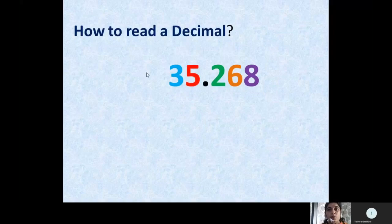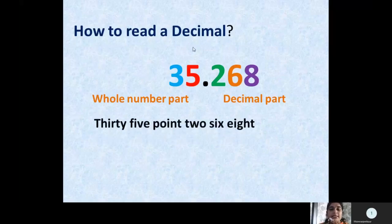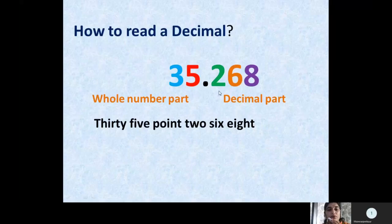We know that before the point we have the whole number part and after the point we have the decimal part. Now we read this number as 35.268. Before the decimal we read the number as per the Indian system. But after the decimal we have to read each digit singly — we can't say 268, as that would be wrong. What is the alternative way to read this?